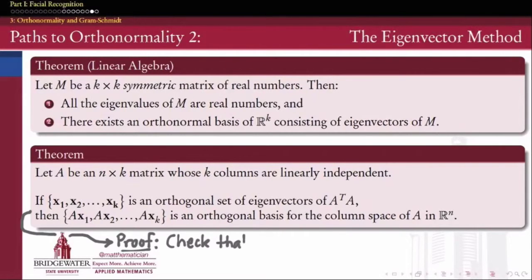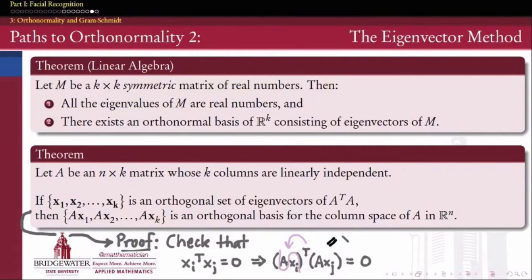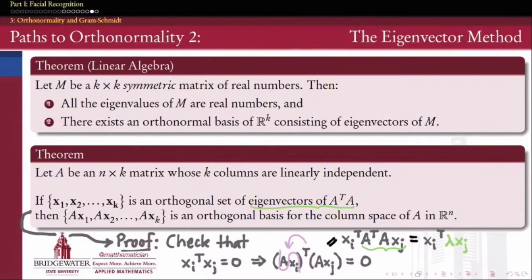All we need to check is that for a pair of vectors, (Ax_i)^T (Ax_j) equals zero — meaning the Ax_i's are supposed to be orthogonal to one another, using the fact that the x_i's are orthogonal. We do that by remembering that the transpose of a matrix product is an anti-involution: we can switch the order and put the transpose on each factor. So (Ax_i)^T equals x_i^T A^T, and the dot product simplifies to x_i^T A^T A x_j. Since x_j is an eigenvector of A^T A, that means A^T A x_j equals lambda times x_j.